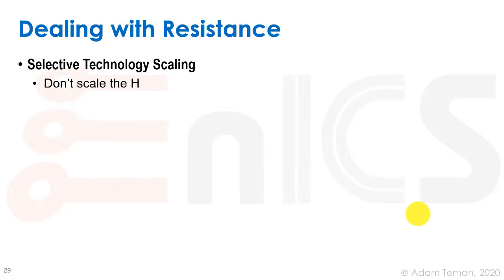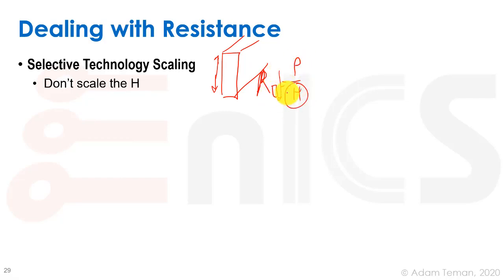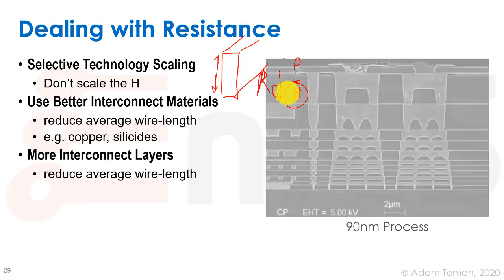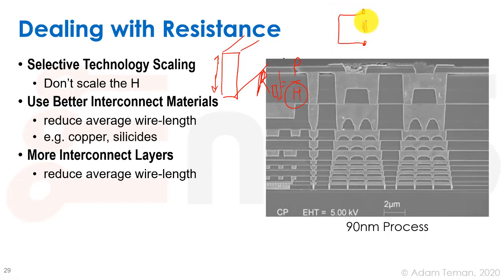There are several ways to deal with resistance. First, we can selectively scale the technology: if we don't scale the height H of conductors — keeping them taller — then R-square = ρ/H becomes lower, which is a good thing and has been done often. Second, we can use better interconnect materials such as copper layers or silicides. Third, we can use more interconnect layers, allowing shorter paths between points on the chip rather than long detours — similar to adding levels to a highway.